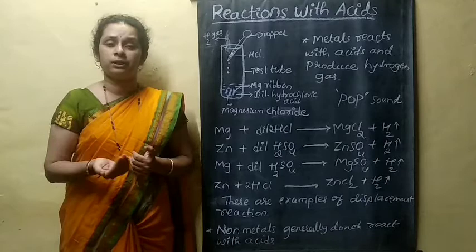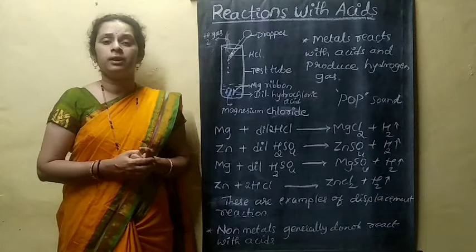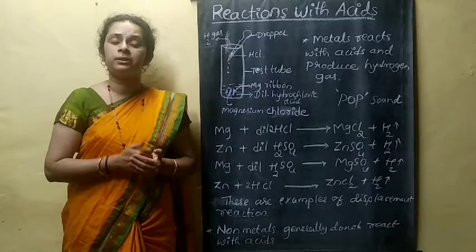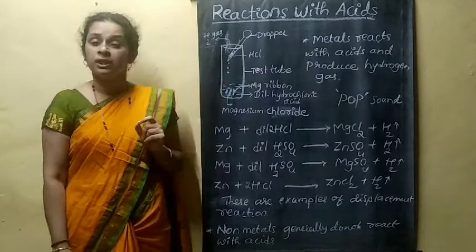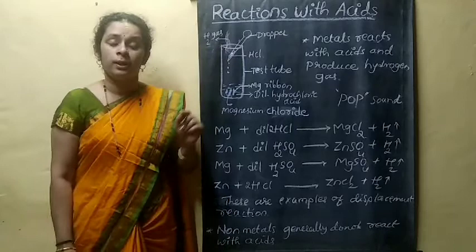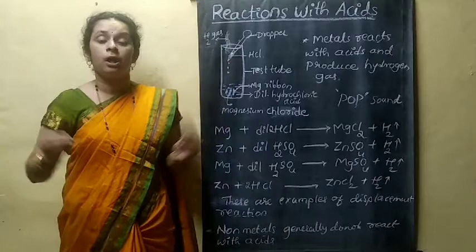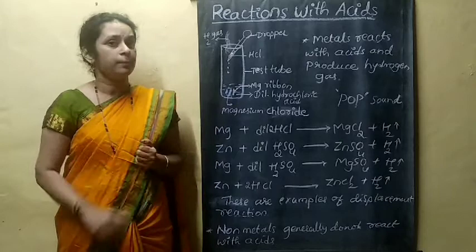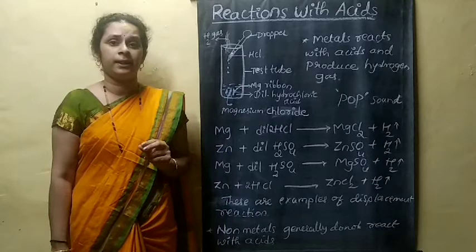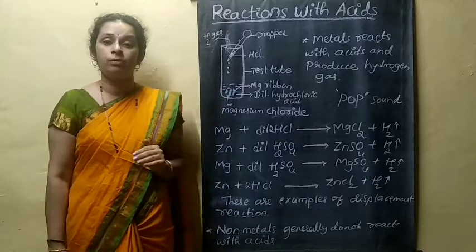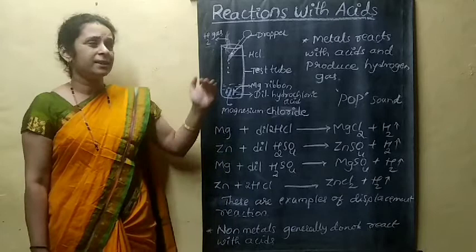You have to check which gas is liberated during this reaction. You cannot identify hydrogen gas just by its color, since oxygen and other gases are also colorless. To test it, bring a burning match stick near the mouth of the test tube. It burns brightly and produces a pop sound — a burst-like sound. That pop sound indicates that the liberated gas is hydrogen.